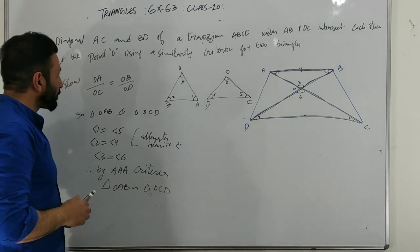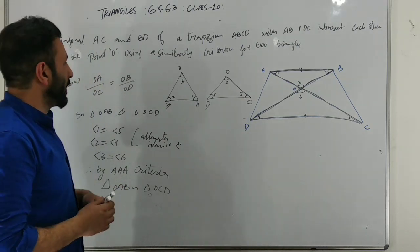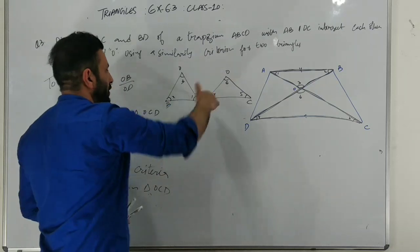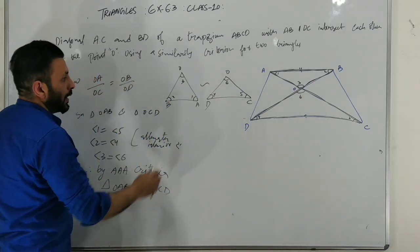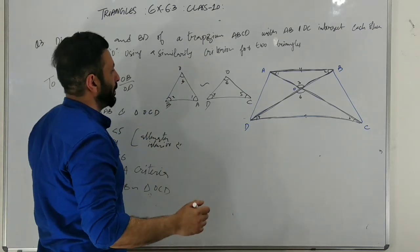After that, when we know two triangles, we know that OAB is similar to OCD. We can prove it. We know that the sides of the ratio will be equal.